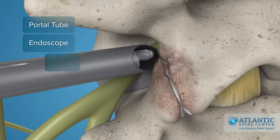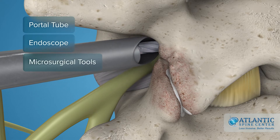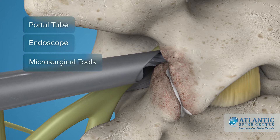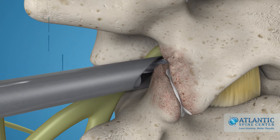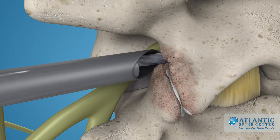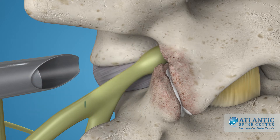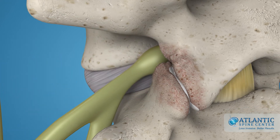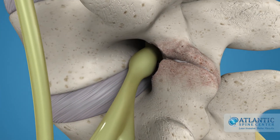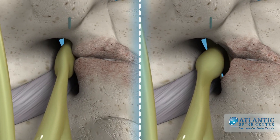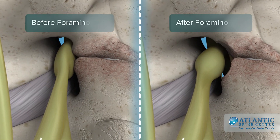With this close-up operative view, your surgeon can now microsurgically remove the small area of the bone. During the process, the exiting nerve root is protected by the tapered end of the tube. All this frees space for the nerve root and relieves compression, thereby eliminating the stenosis symptoms.